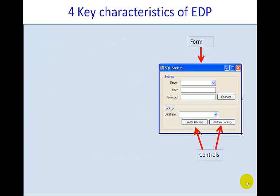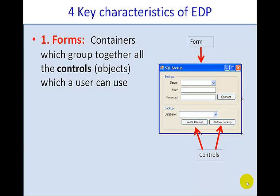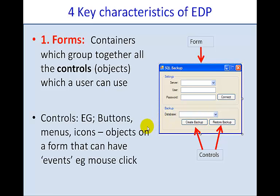There's four key characteristics of event-driven programs. The first one is the form, the concept of the form. A form, in terms of event-driven programs, is a container which groups together all the objects, or the controls, which a user can use. So if you look at the image on the right, we have a simple Visual Basic form, which has a number of controls on it. It's got buttons. At the top you can also see it's got the form controls themselves. Each one of these is a control. It may or may not have coding behind that control, but basically, if I click on one of the buttons, I would expect that to be counted as an event, and something to actually happen.